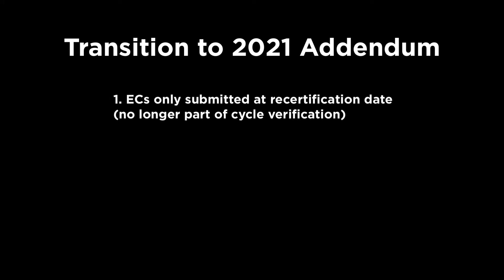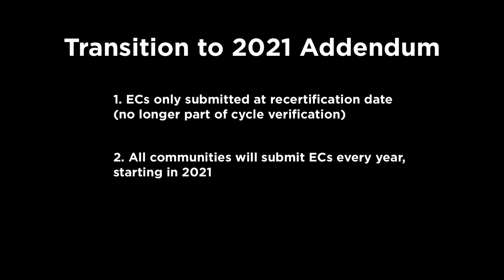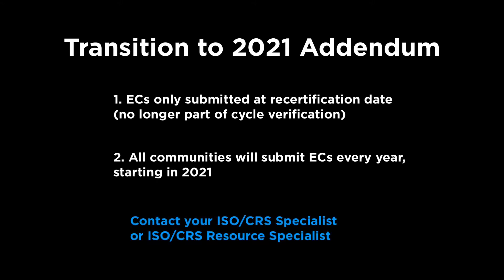Another thing you're probably wondering about is the changes in the CRS 2021 addendum that affected when you submit ECs. ECs will no longer be submitted with your cycle verification. They will now be submitted only at your recertification date each year, and every community will have to submit them — no matter when you last cycled, whether you are currently undergoing your cycle, or whether you have a cycle scheduled for later in the year. All CRS communities will submit their ECs at their recertification date starting in 2021 and every year thereafter. For more details, please contact your ISO CRS Specialist or CRS Resource Specialist, and they will send you a link to our recorded video on the Class 9 changes and changes to Activity 310.